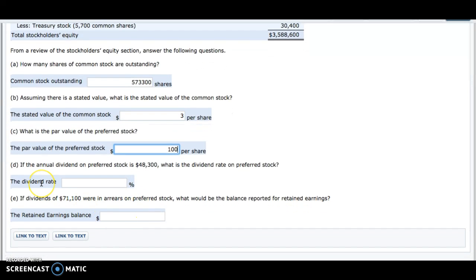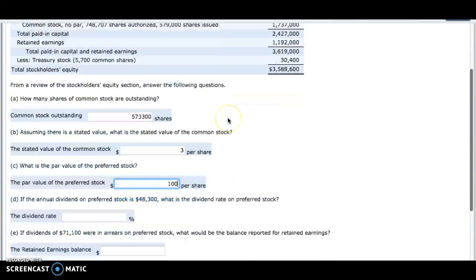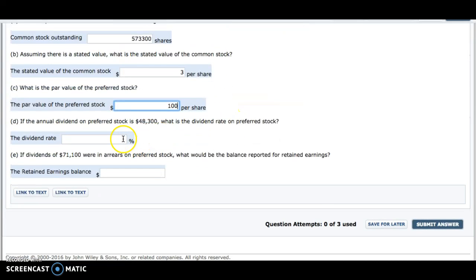Now the fourth question: if the annual dividend on preferred stock is $48,300, what is the dividend rate on preferred stock? To calculate this, I would take the $48,300 and divide it by the number of preferred stock issued, which is 6,900, and that gives us a value of $7 per share.